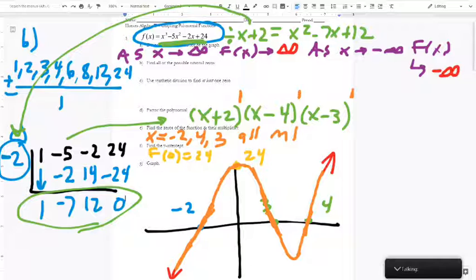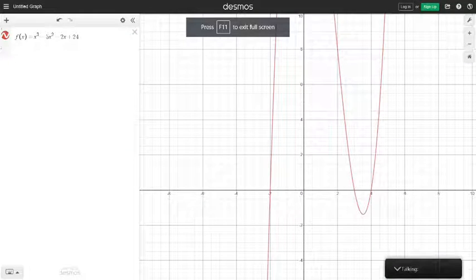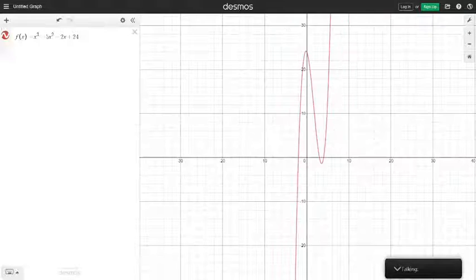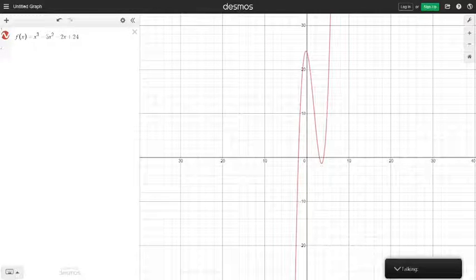And then if you were doing this on your own, you would then check this. So you would go to Desmos and get our graph that we just graphed and see if it makes sense. So here's what the graph looks like in a graphing calculator. Not exactly like our picture, but it has the right end behavior. It hits the zeros, and it has the right y-intercept. So we're good.